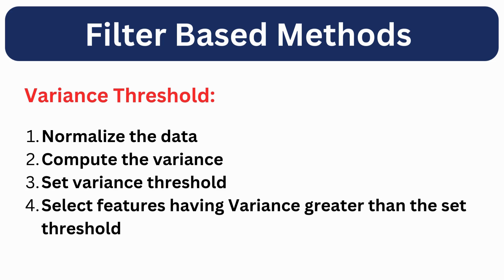Let's talk about variance threshold. It is the simplest method for feature selection. The key steps in variance threshold include normalizing the data, computing the variance of each feature, defining a threshold, and then selecting the features having variance greater than the set threshold.